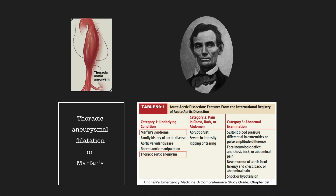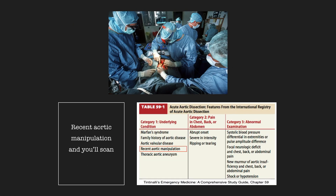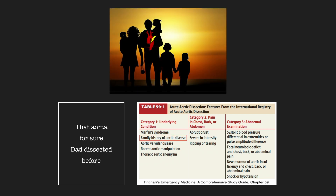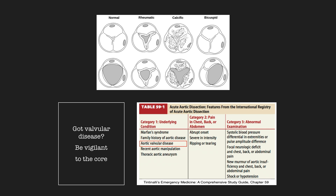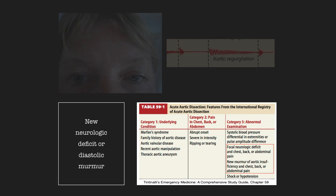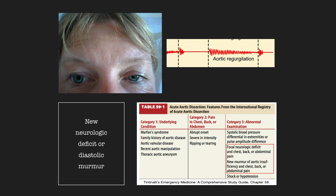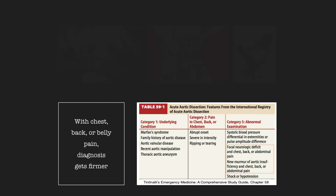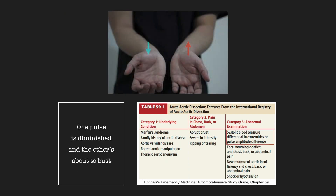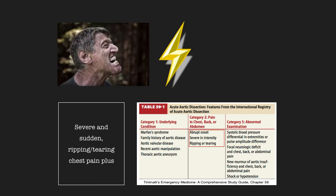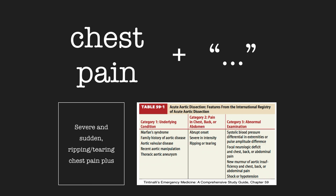Thoracic aneurysmal dilatation of Marfan's, recent aortic manipulation — scan that aorta for sure. Dad dissected before, got valvular disease — be vigilant to the core. New neurologic deficit or diastolic murmur, with chest, back or belly pain — diagnosis gets firmer. One pulse is diminished and the other's about to bust. Severe and sudden ripping, tearing, chest pain plus.